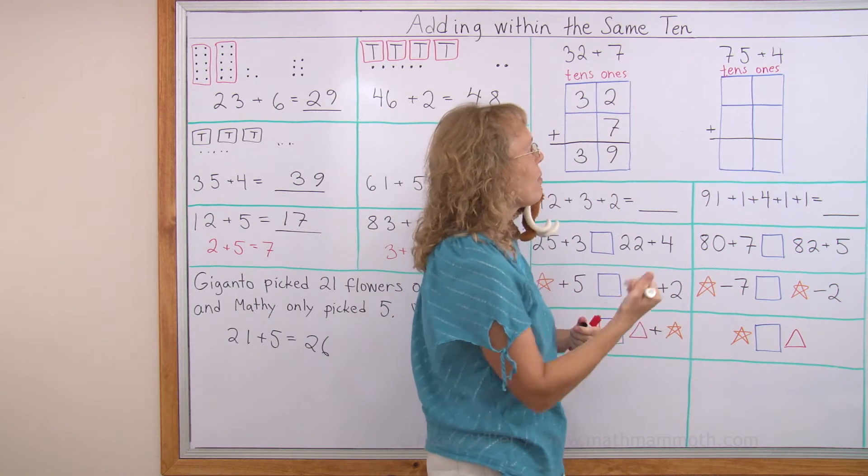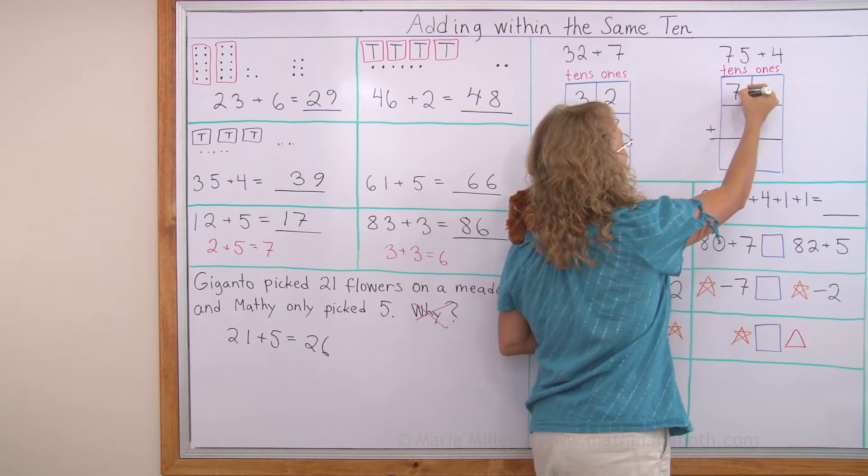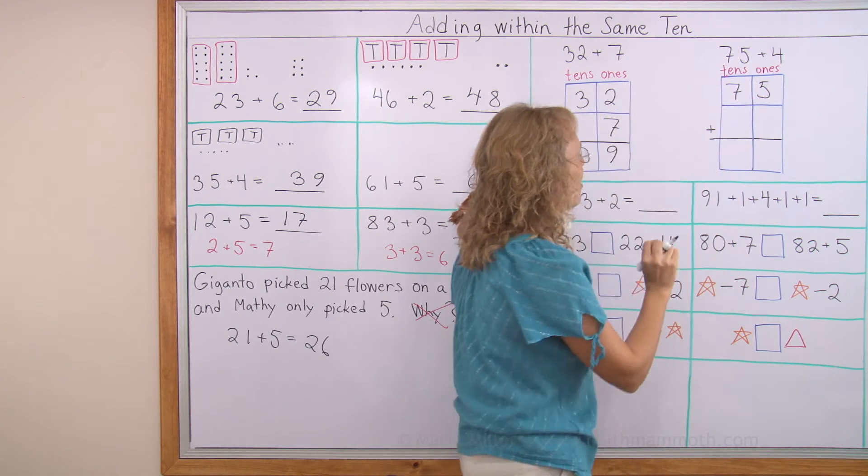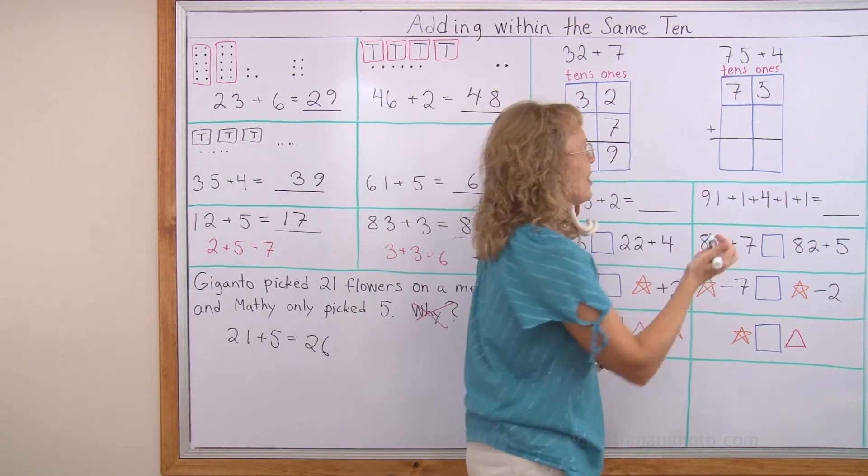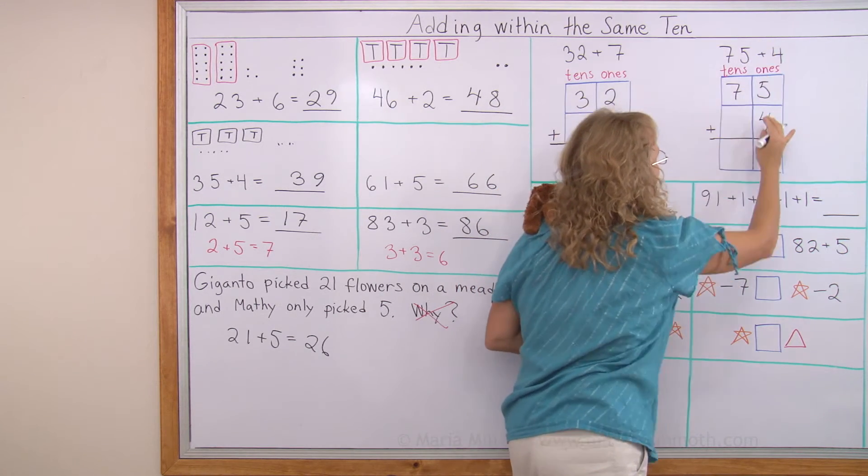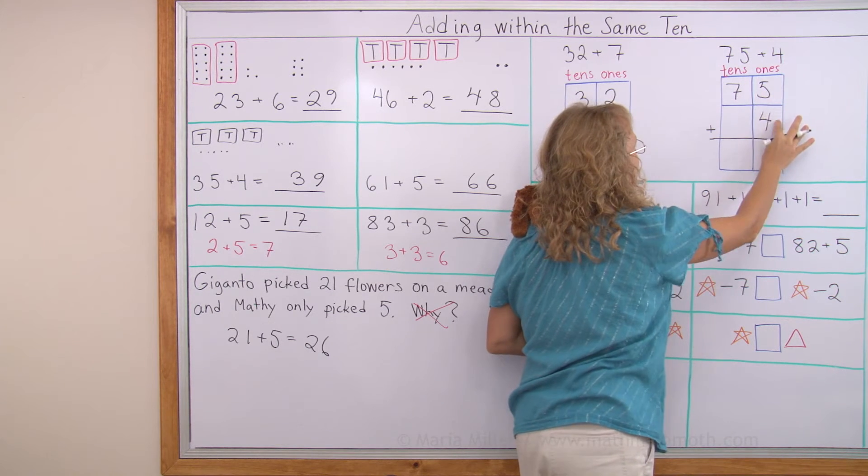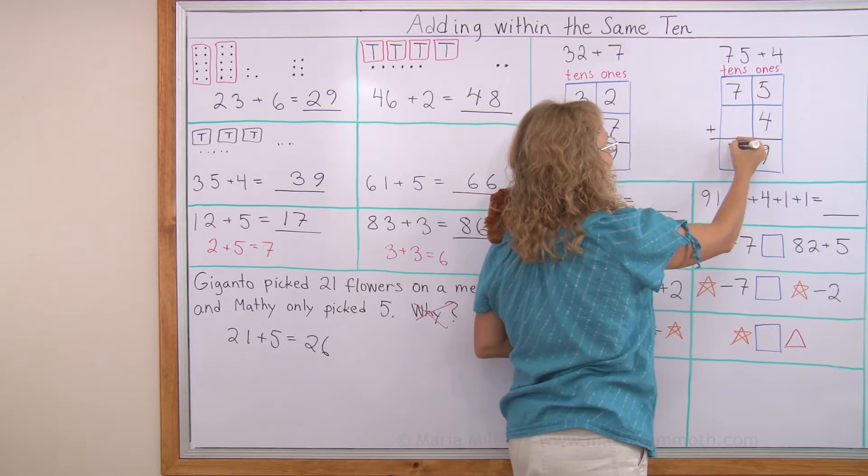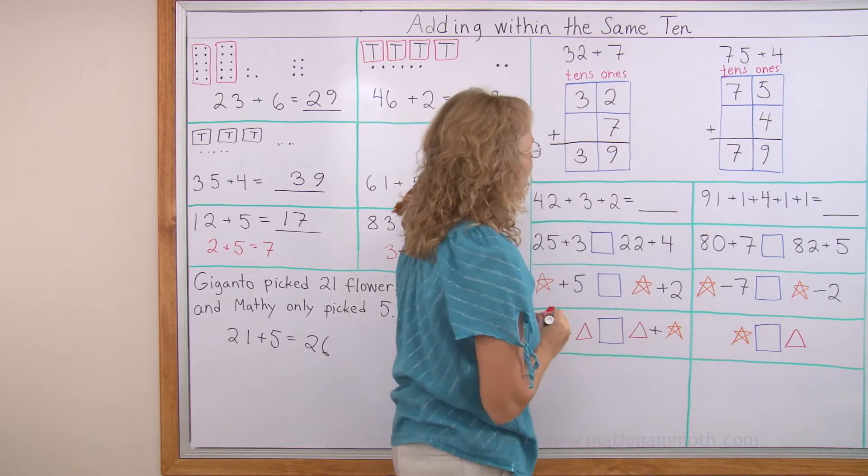Let's try it again. 75 plus 4. I will write 75 like this. 7 tens, 5 ones. 4 means 4 ones. So it has to go here. And now I add in the ones column. 5 plus 4 equals 9. Then 7 plus nothing in the tens, 7 tens. The answer is 79.